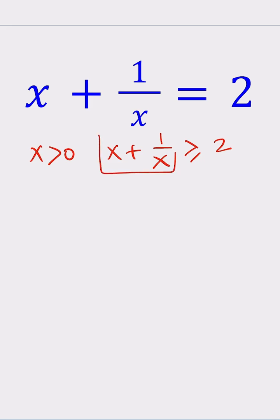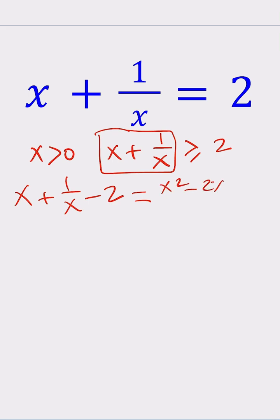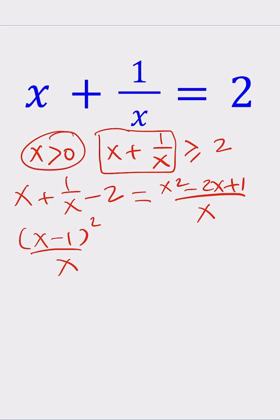Take that expression x plus 1 over x and subtract 2 from it. Make a common denominator — you're going to get x squared minus 2x plus 1, divided by x. The numerator is going to be x minus 1, quantity squared. And what did we assume? We assumed that x is greater than 0.